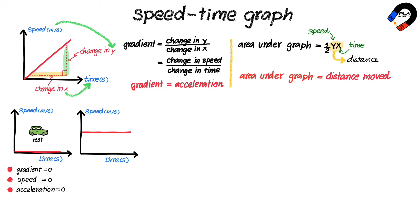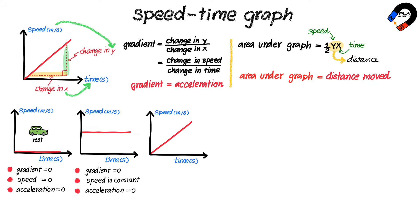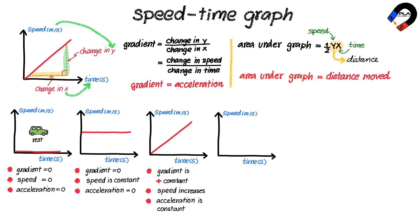A horizontal line graph with zero gradient indicates that the object is moving at constant speed with no acceleration. A straight line graph with a positive constant gradient indicates that the object is moving at increasing speed with constant acceleration. A straight line graph with a negative constant gradient indicates that the object is moving at decreasing speed with constant deceleration.